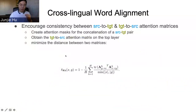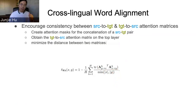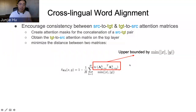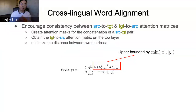Here is our objective for cross-lingual alignment. Based on the previous slide, these two matrices are attention matrices with scores normalized between 0 and 1. If we get the trace of the product of these two matrices, this value is bounded by the minimum length of the source or target sentence, and the upper bound is achieved when the two attention matrices are identical. So by optimizing this equation, we encourage the two attention matrices to be as similar as possible.